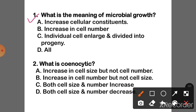Question 1: What is the meaning of microbial growth? Answer: Option D — All. Microbial growth includes increased cellular constituents, increase in cell number, and individual cells enlarging and dividing into progeny.